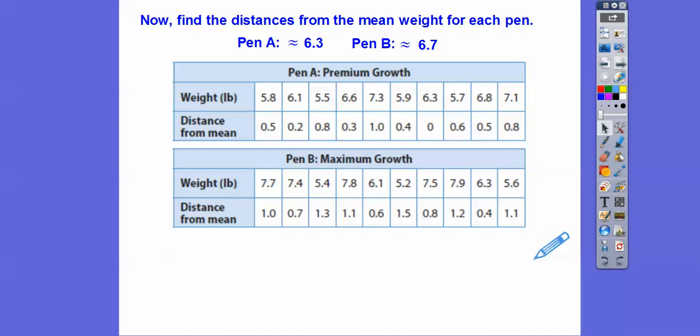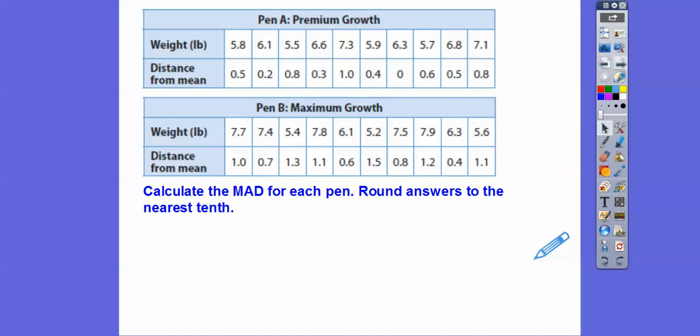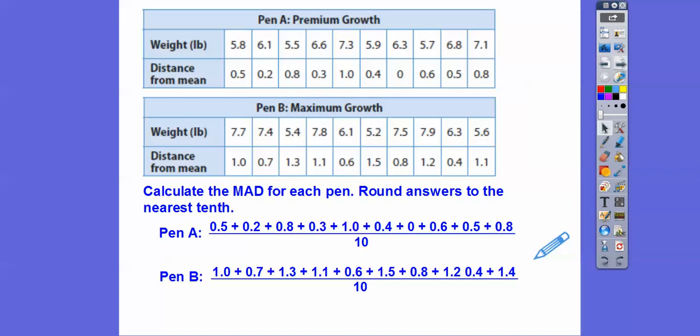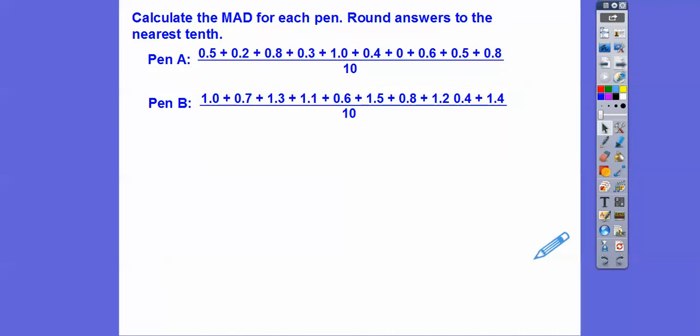Here we go. Let's calculate the MAD for each pen. Now I'm just adding up all of these numbers divided by 10 and all of these numbers divided by 10. And the bigger MAD that the pens have, the more variability that they have. And I think that's something that we want less of in this case. So, I get about 0.5 and 1.0.